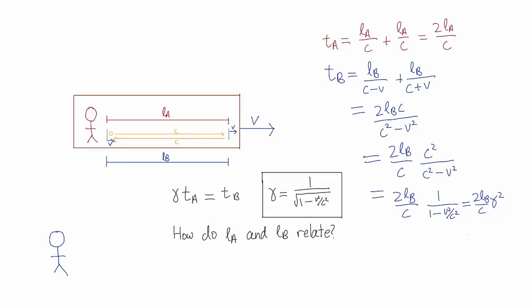We have γTA = TB. Substituting in the values for TA and TB, we find, and simplifying — LB = LA over γ.